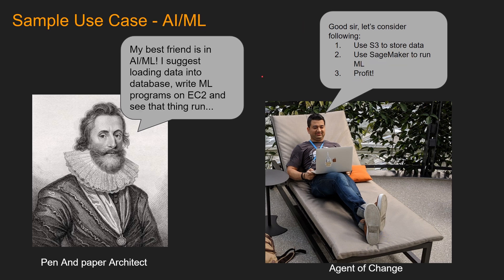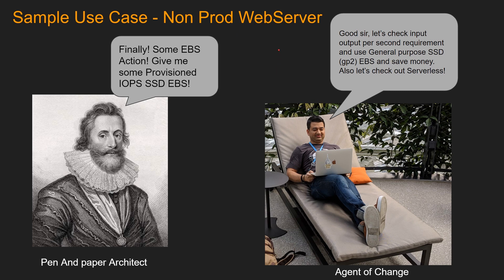Another AI/ML use case: a pen and paper architect might say, 'My best friend is in AI/ML — load data into a database, write ML programs on EC2, and see that thing run.' However, you could do S3 to store data, SageMaker to run machine learning, and have profit. Last use case: a non-prod web server where you need to install some software. The pen and paper architect might say, 'Finally, some EBS action — give me provisioned IOPS SSD EBS.' Provisioned IOPS is the most expensive kind of EBS. You should look into your IOPS requirement, and if possible, use general purpose SSD or GP2 EBS, which can save you a lot of money.